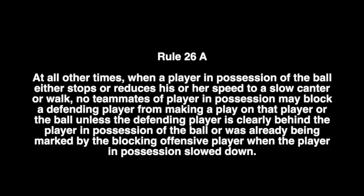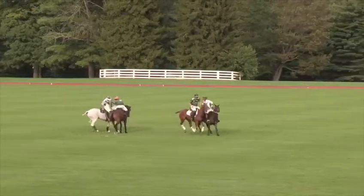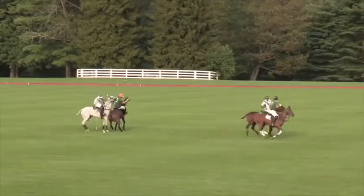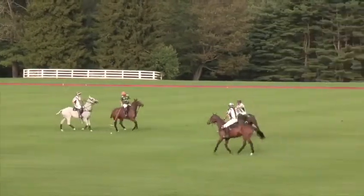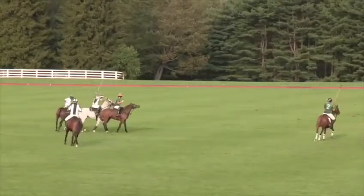This video is intended to give an explanation and some video examples of improper blocking live play. The three main points are that the player in possession stops or reduces their speed to a slow canter, a teammate may not block a defender from making a play on that player unless they were already engaged before the slowdown, or the player is clearly behind.